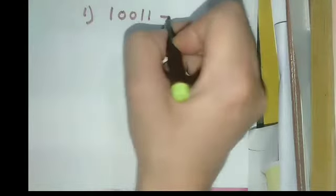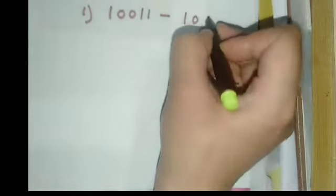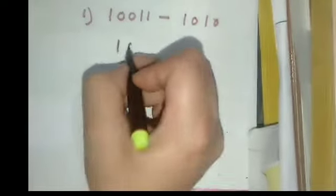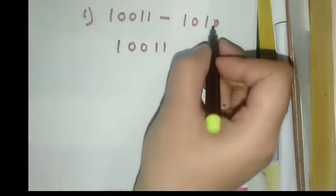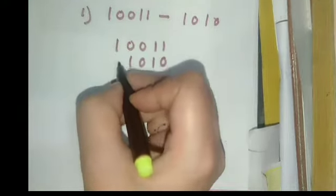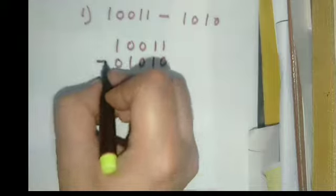Now let's see an example of binary subtraction. Suppose we have to calculate 10011 minus 1010. We write 10011, and below it we write 0101. Since there is no number in the leading position, we write 0, and then subtract.